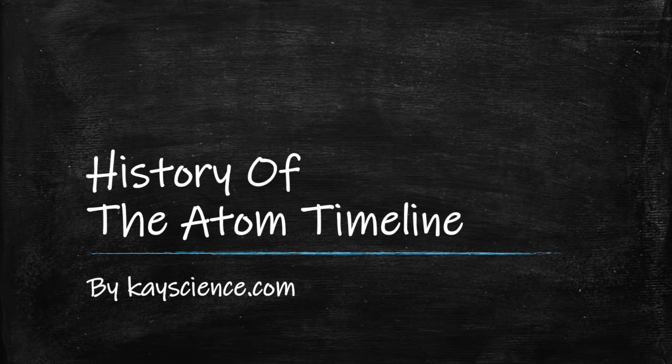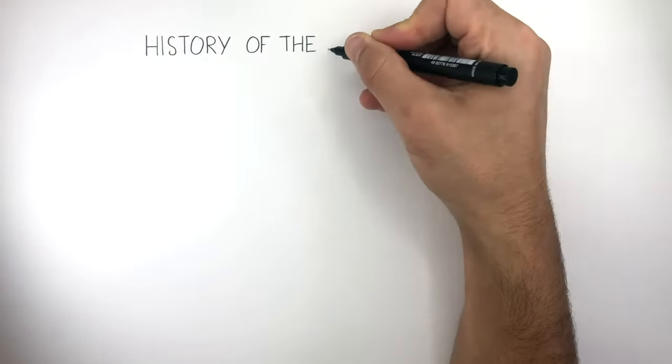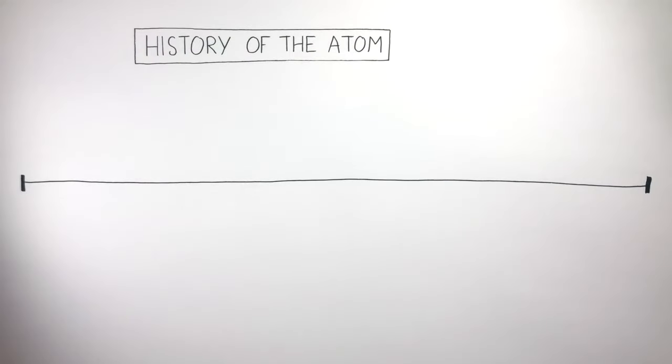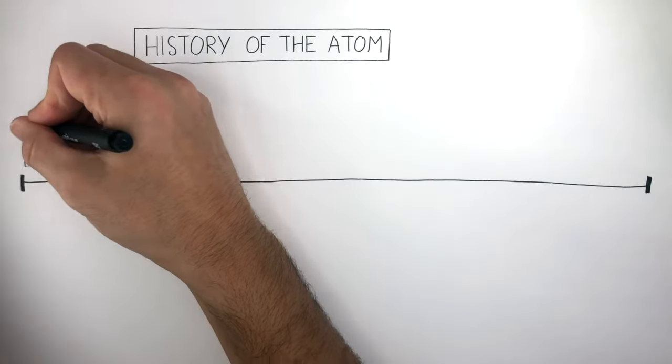A History of the Atom Timeline by KScience.com. The history of the atom can be divided into very key milestones which we're going to place on a timeline, and it starts 2,500 years ago with a man called Democritus.